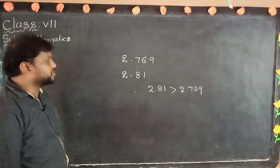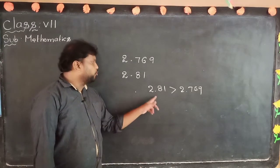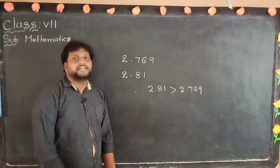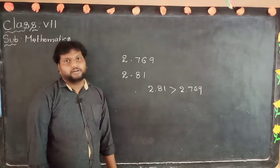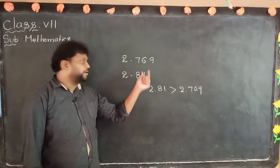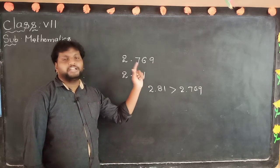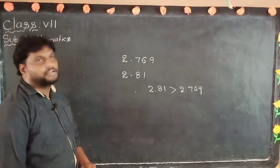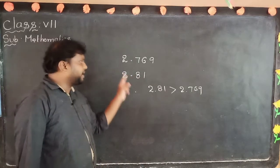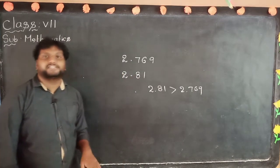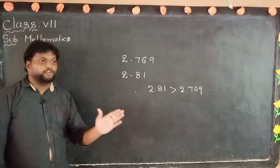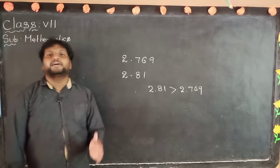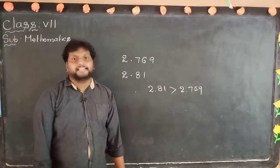This is the process: 2.81 is more than 2.769. It does not depend upon number of digits — here two digits, but here three digits, nothing to worry. In tenth place, if it is also equal we go to hundredth place; if hundredth place is also equal, then go to thousandth place, and so on.